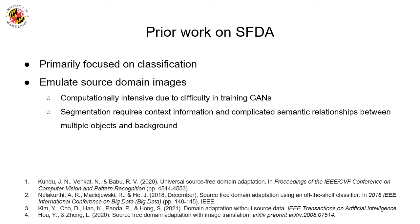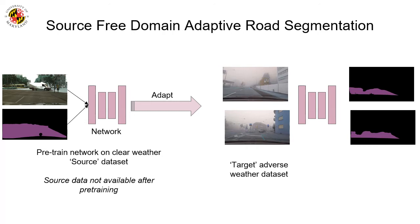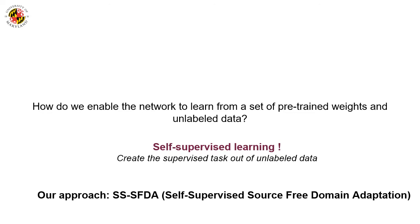We present a novel approach for source-free domain adaptive road segmentation. We are provided with a model pre-trained on clear weather data, which is no longer available. The task is to adapt this network to an unlabeled adverse weather dataset. Our approach is based on self-supervised learning. We leverage the pre-trained model and unlabeled data to obtain supervisory signals from the data itself for learning robust feature representations in an efficient manner.